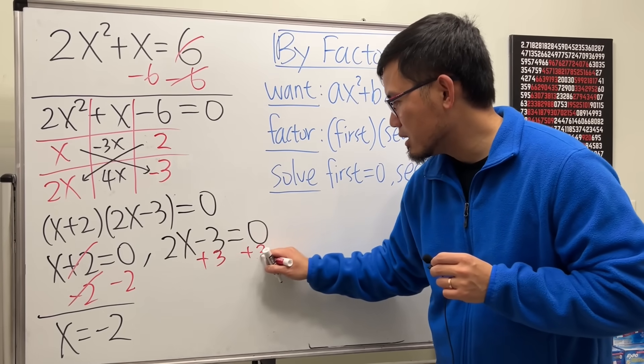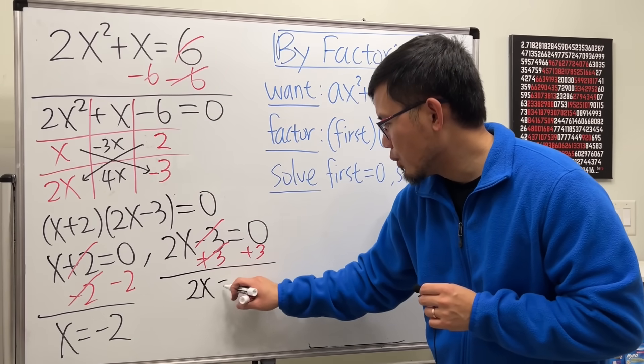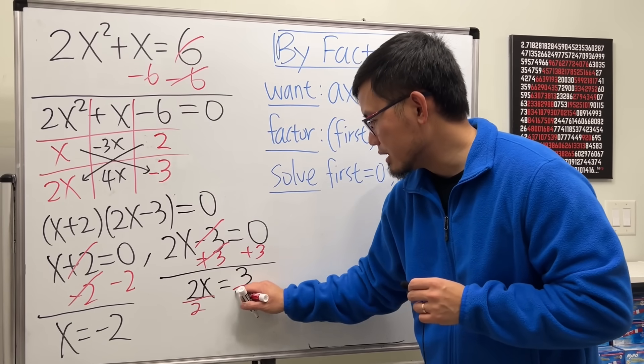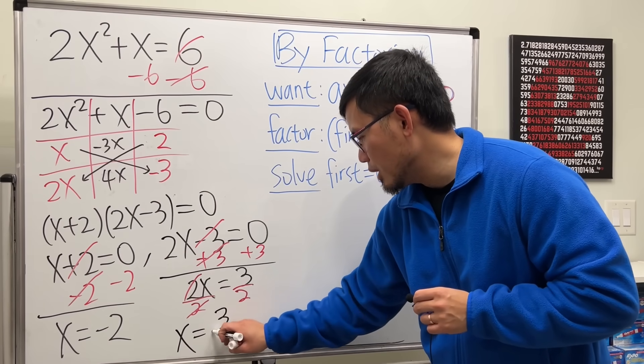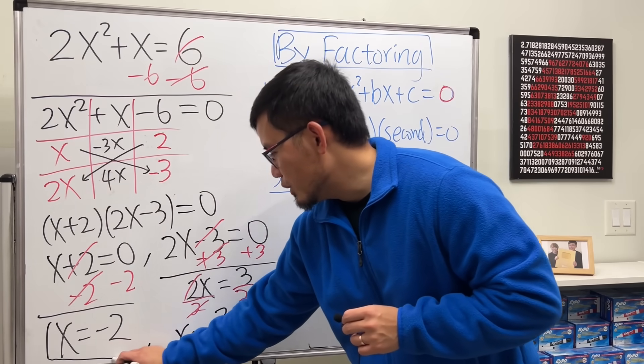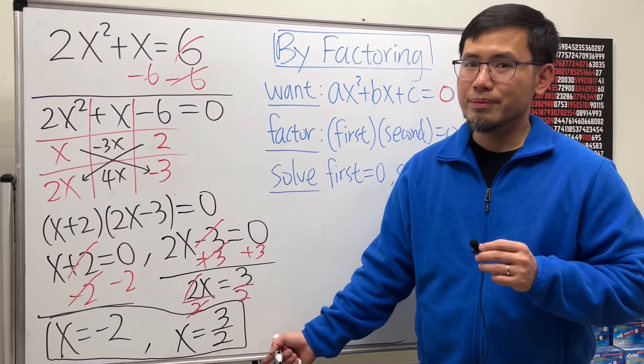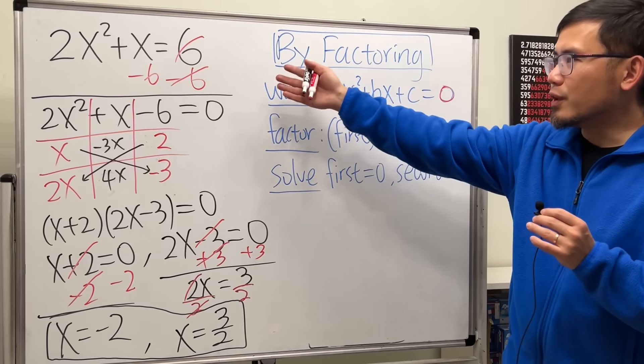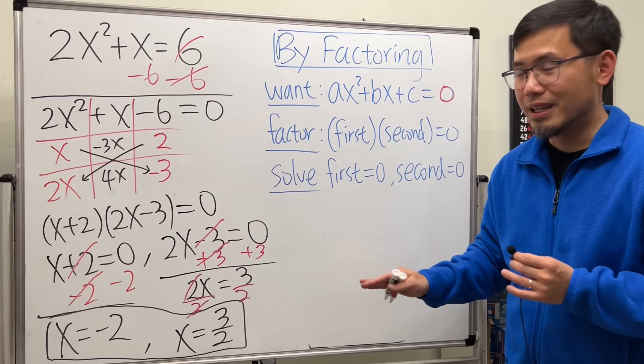Done for that. But for this, add 3 on both sides, cancel, and we get 2x equals 0 plus 3 is 3. And then lastly, divide both sides by 2. So x equals 3 over 2. Done. Two answers: x equals negative 2, and the other one is x equals 3 over 2. And right here, if I'm just learning how to solve a quadratic equation by factoring, this will be done for you. Like, this is it.